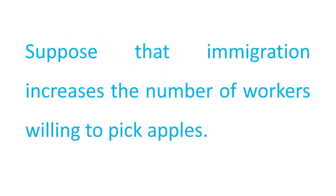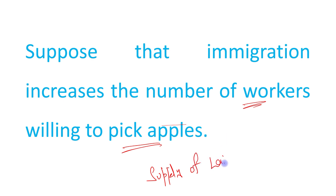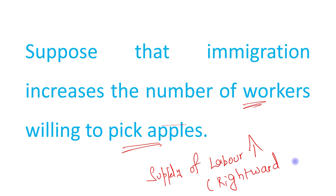Now suppose that immigration increases the number of workers willing to pick apples. Due to immigration, it increases the number of workers willing to pick apples. So what will be its impact? The supply of apple pickers — basically the supply of labor — will be increased, leading to a rightward shift in the supply curve of labor.